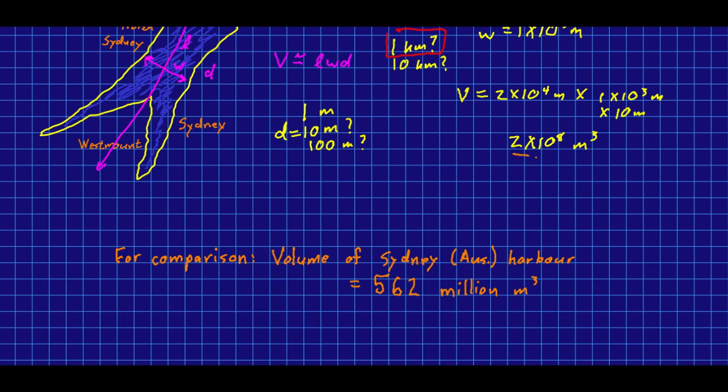So let's compare our answer for Sydney, Nova Scotia's harbor with something we can look up, like the volume of Sydney, Australia's harbor. So Wikipedia, which for something simple and factual like this is probably pretty correct, says that the Sydney, Australia harbor is 562 million meters cubed. And so that's 5.62 times 10 to the 8 meters cubed. And so we're in the same order of magnitude. And that means our answer is probably pretty believable.